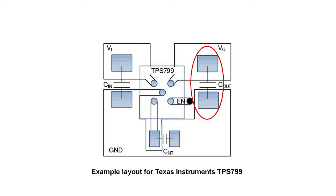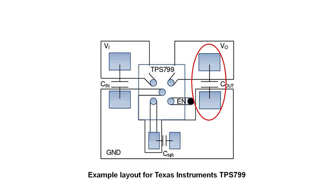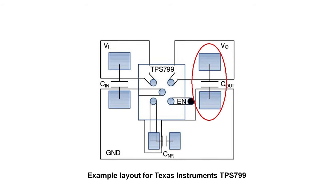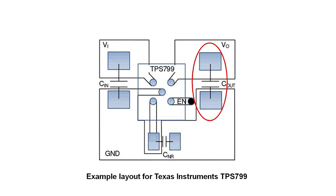It's also critical to place the output capacitor for the power supply regulator as close as possible to the output pin of the regulator. This is necessary for optimizing stability, because all regulators use a feedback loop that can oscillate if it's not properly stabilized. This capacitor being placed close to the output pin also improves the transient response of the regulator.